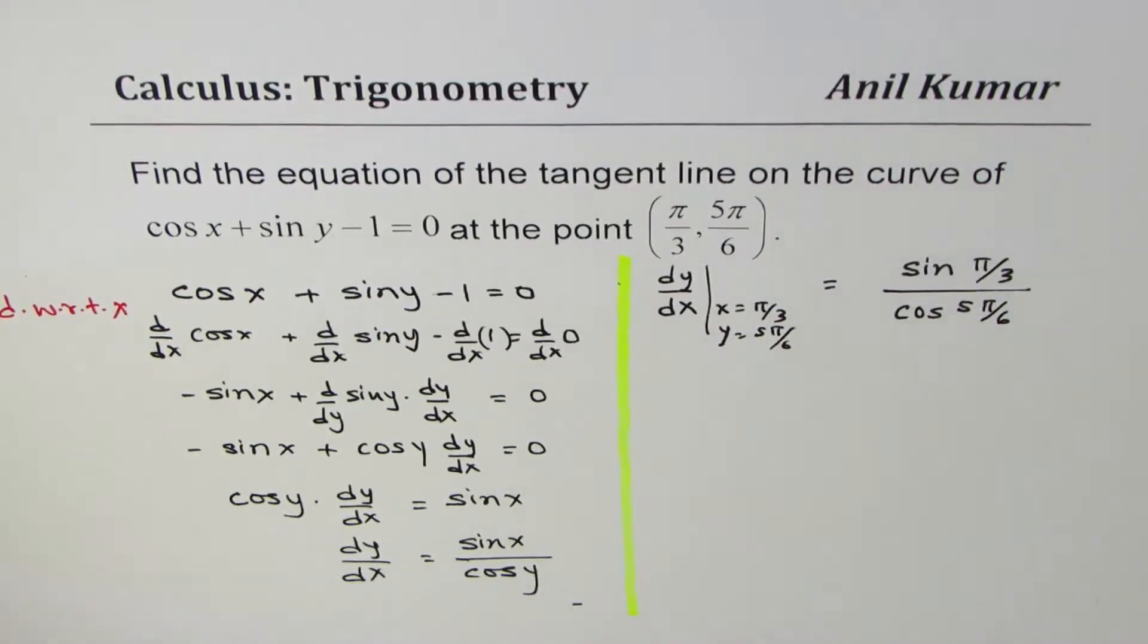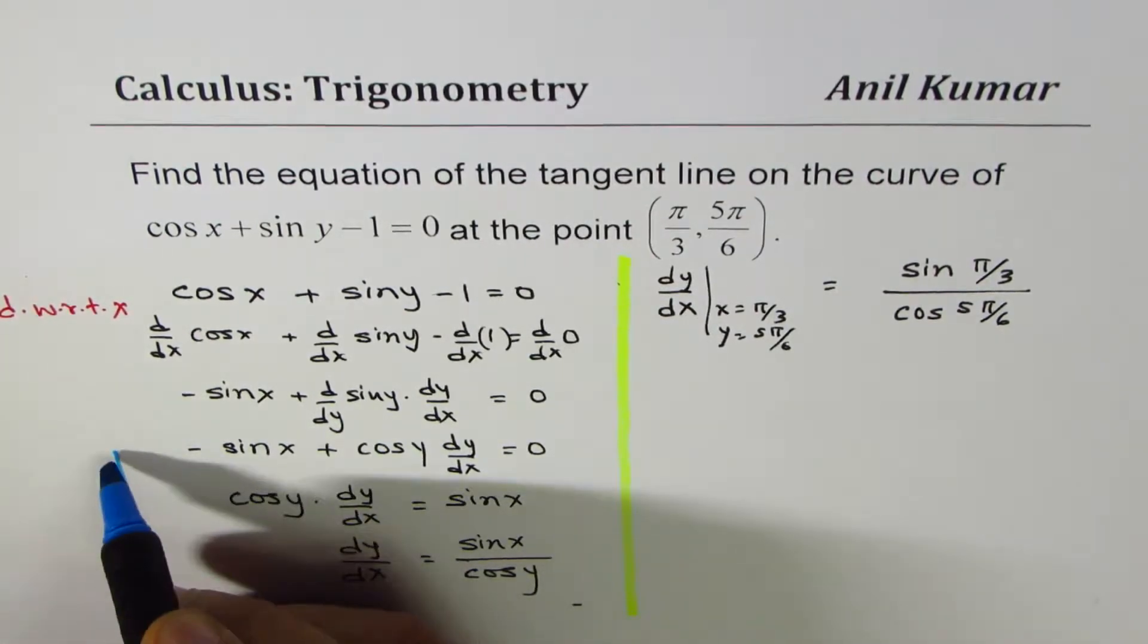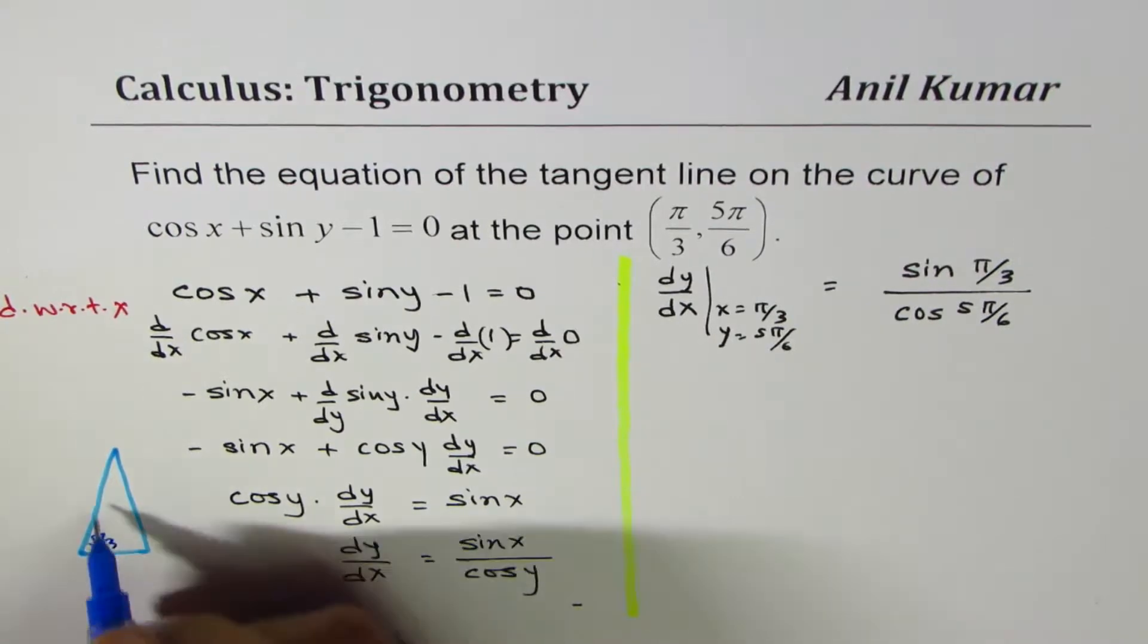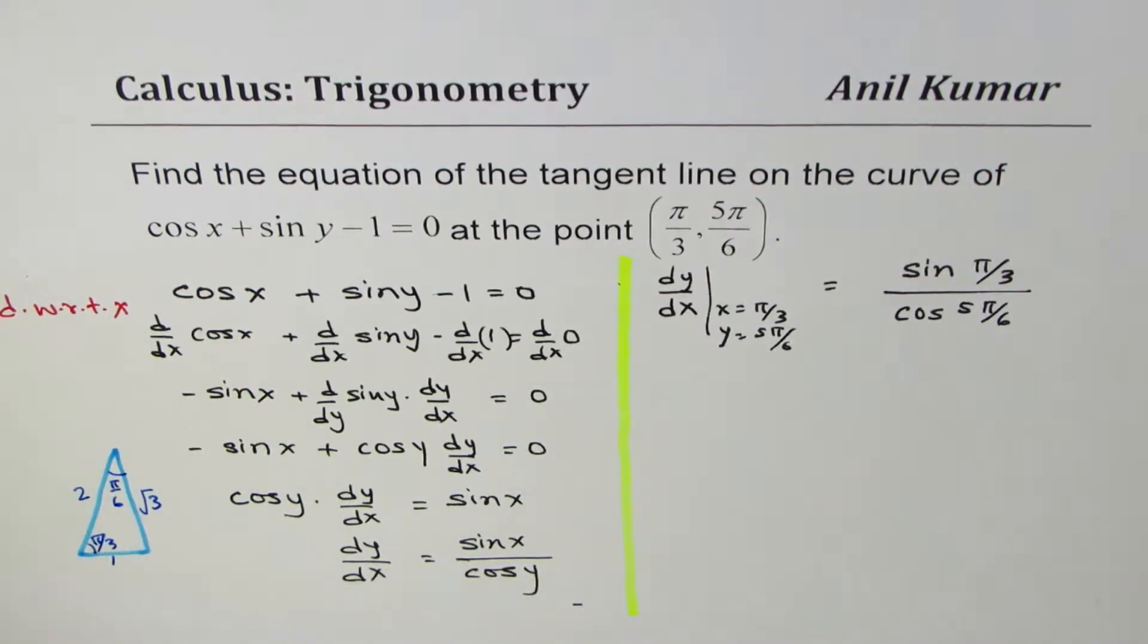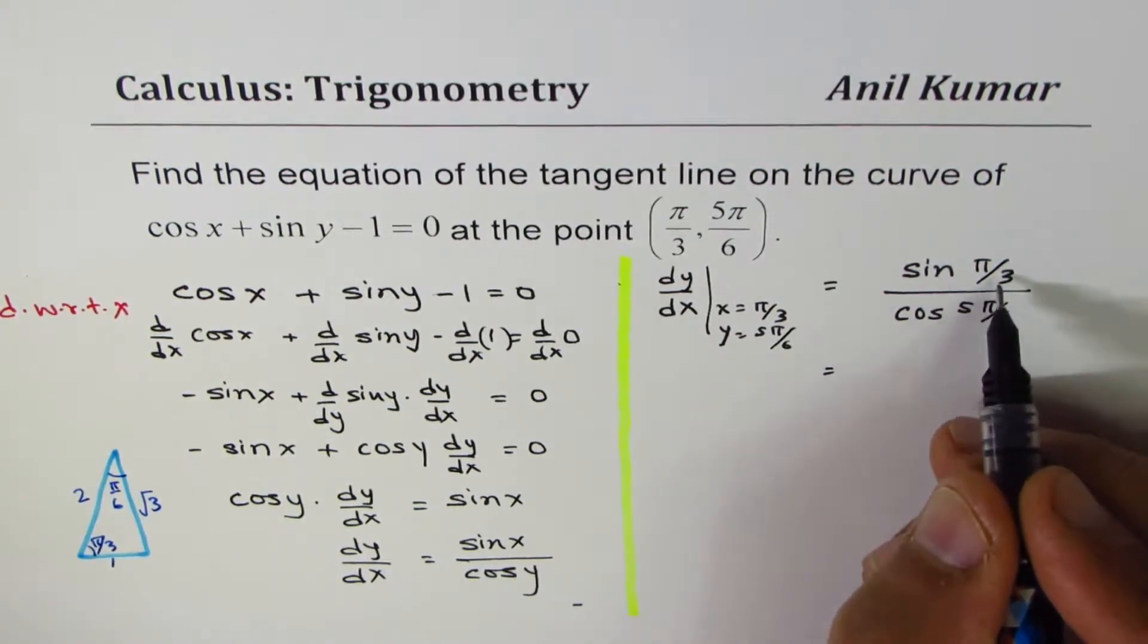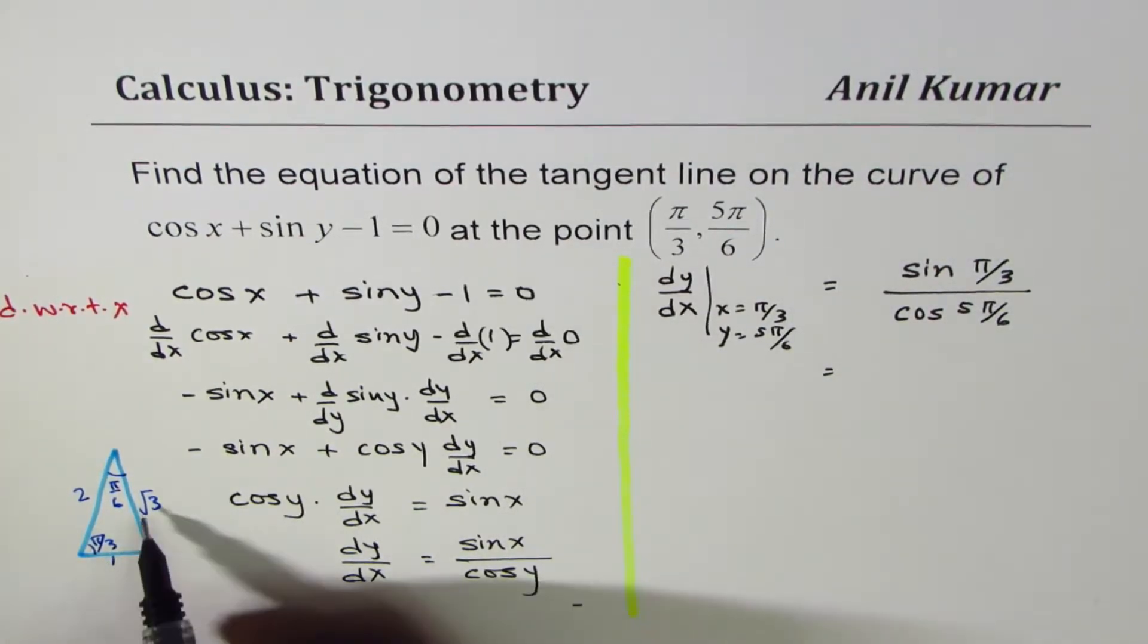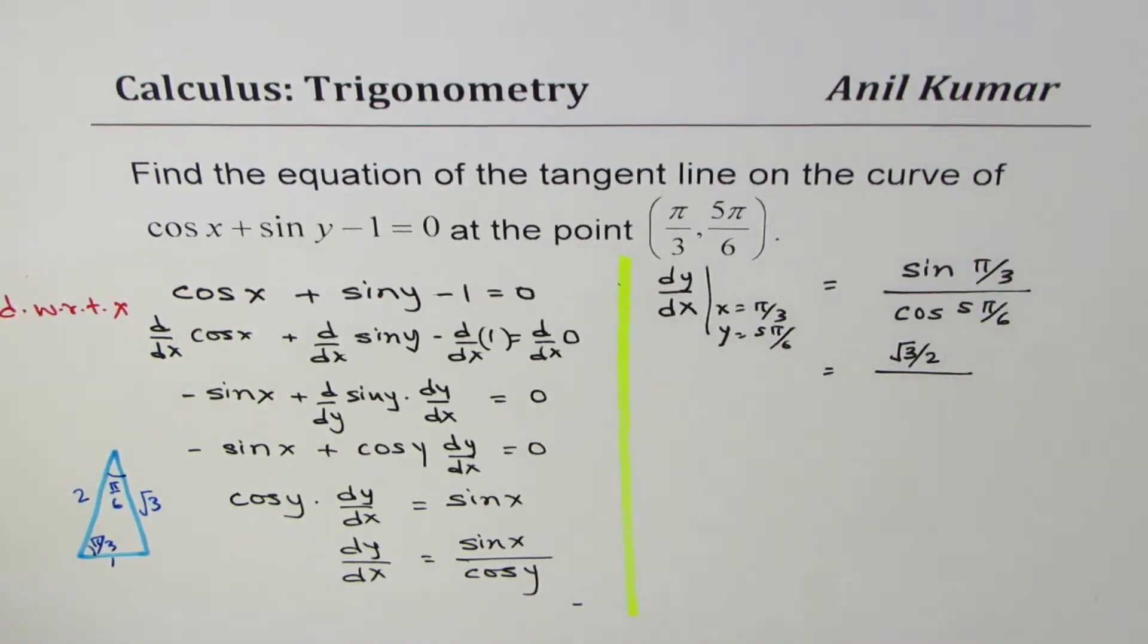These are special triangles. Let's make one here. We are working with π/3 and π/6. That is π/3: 1, 2, √3. This is π/6. Let's substitute the values. Sin(π/3), that has to be positive, it is in quadrant 1. So π/3 sin is √3/2 over cos(5π/6).